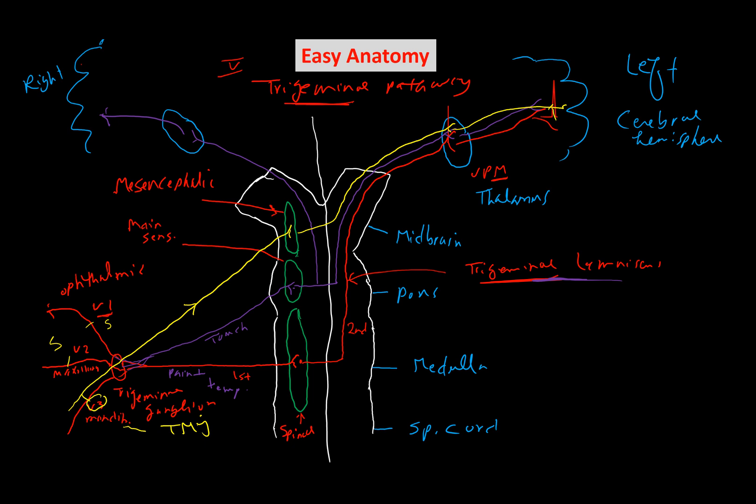From the mesencephalic nucleus, the proprioceptive fibers cross to the opposite side, joining the other fibers and going to the thalamus, and from the thalamus continue on. It's important to remember that proprioceptive fibers are only carried by the mandibular division — V3 — because it brings sensation from the TMJ. V1, V2, and V3 all carry pain, temperature, and touch, but only V3 carries proprioception, going to the mesencephalic nucleus — the uppermost nucleus.